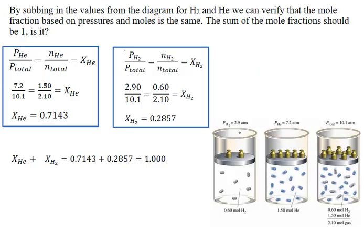Substituting the values from the diagram and looking at the mole fractions: if we take the partial pressure of helium and divide it by the total pressure, as well as the number of moles of helium divided by the total number of moles, we obtain the mole fraction of helium in both cases, which is 0.7143. So helium is making up 71.43% of the sample and contributing 71.43% of the pressure.